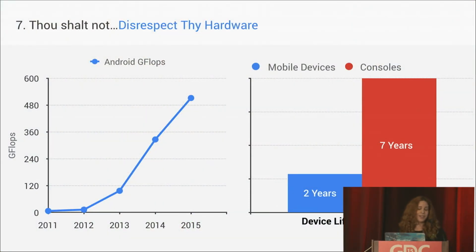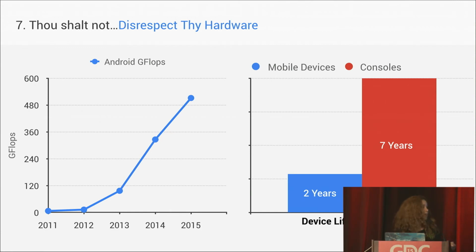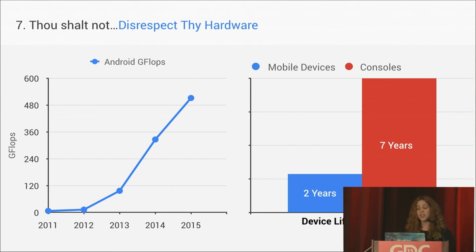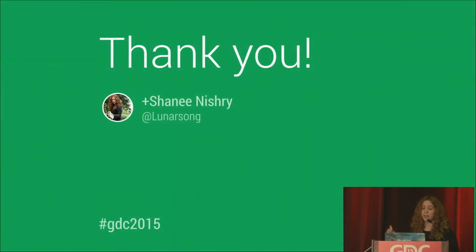Number seven: do not disrespect the hardware. Android is quite a new platform, but if we look at the performance over the past four years only, we can see the performance is more than doubling every year, and the chart is going up and faster.